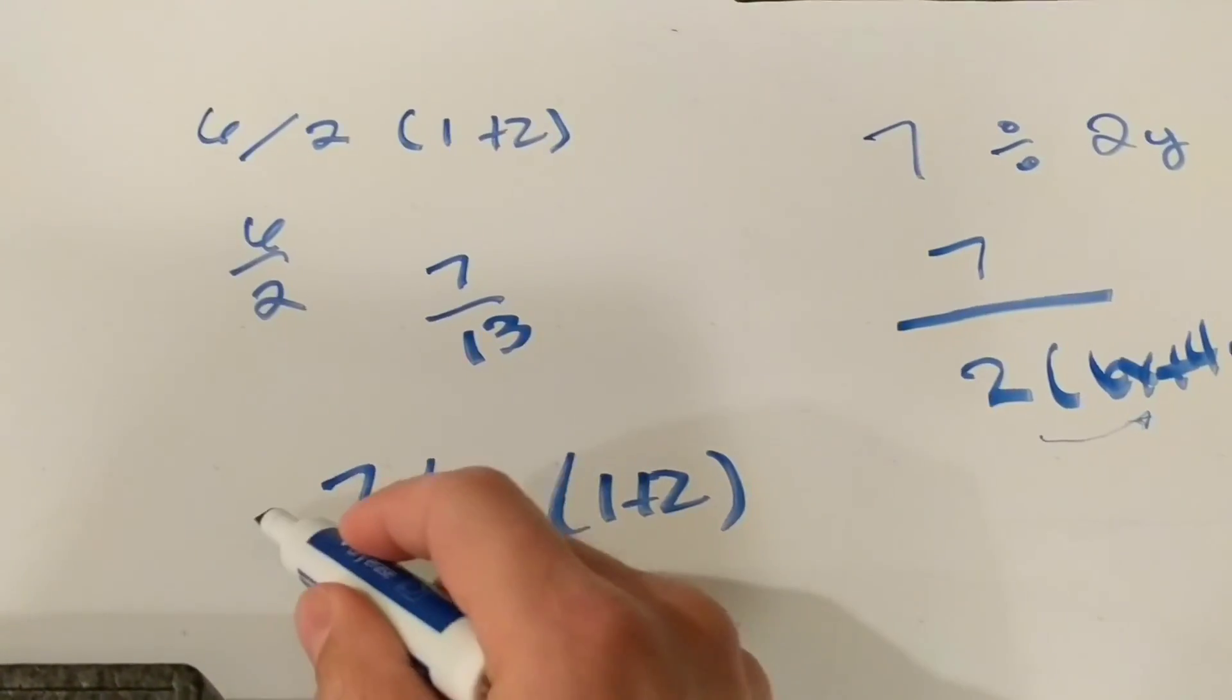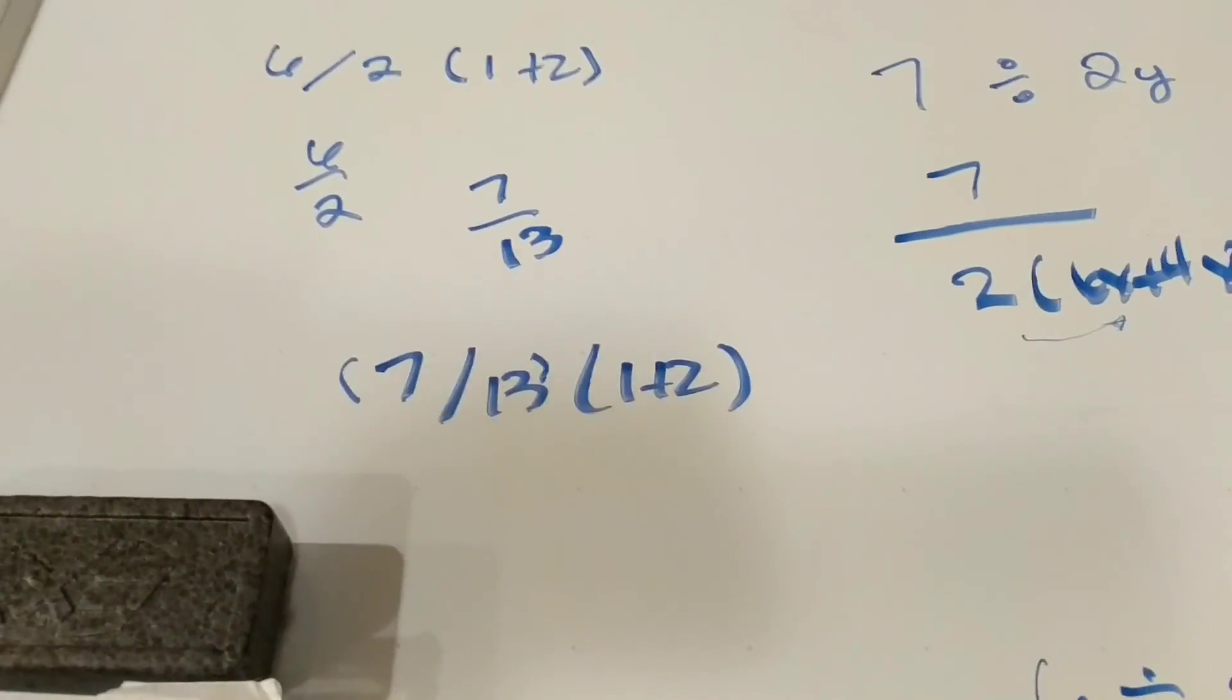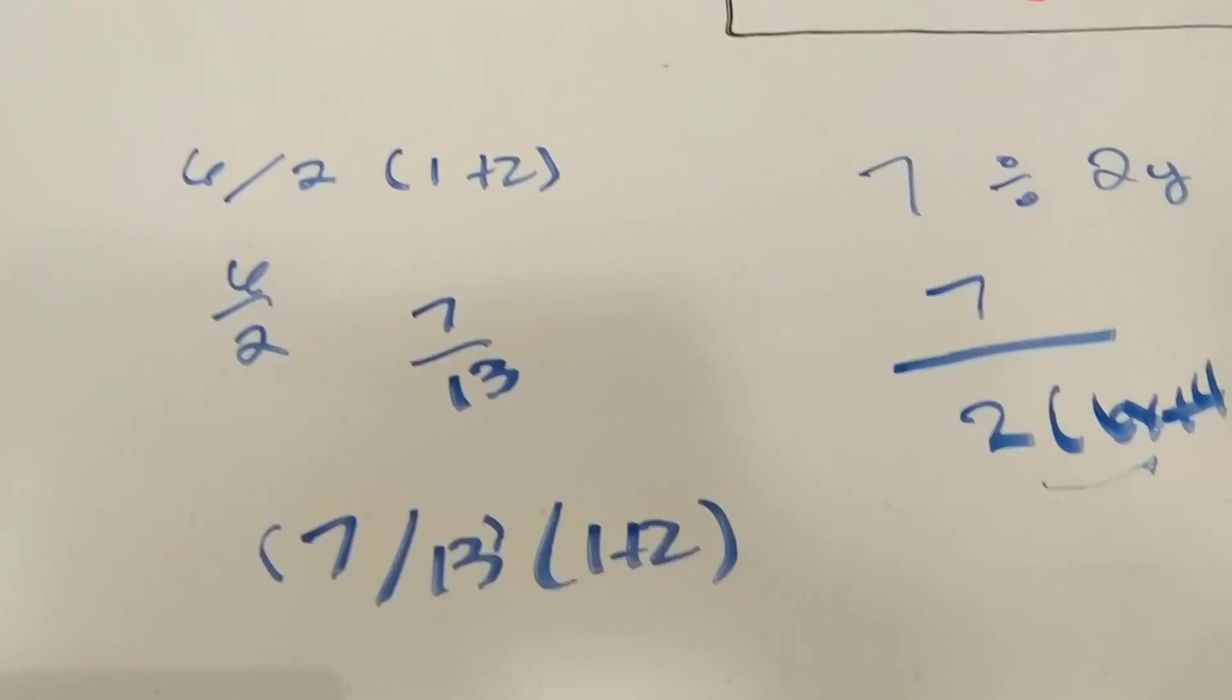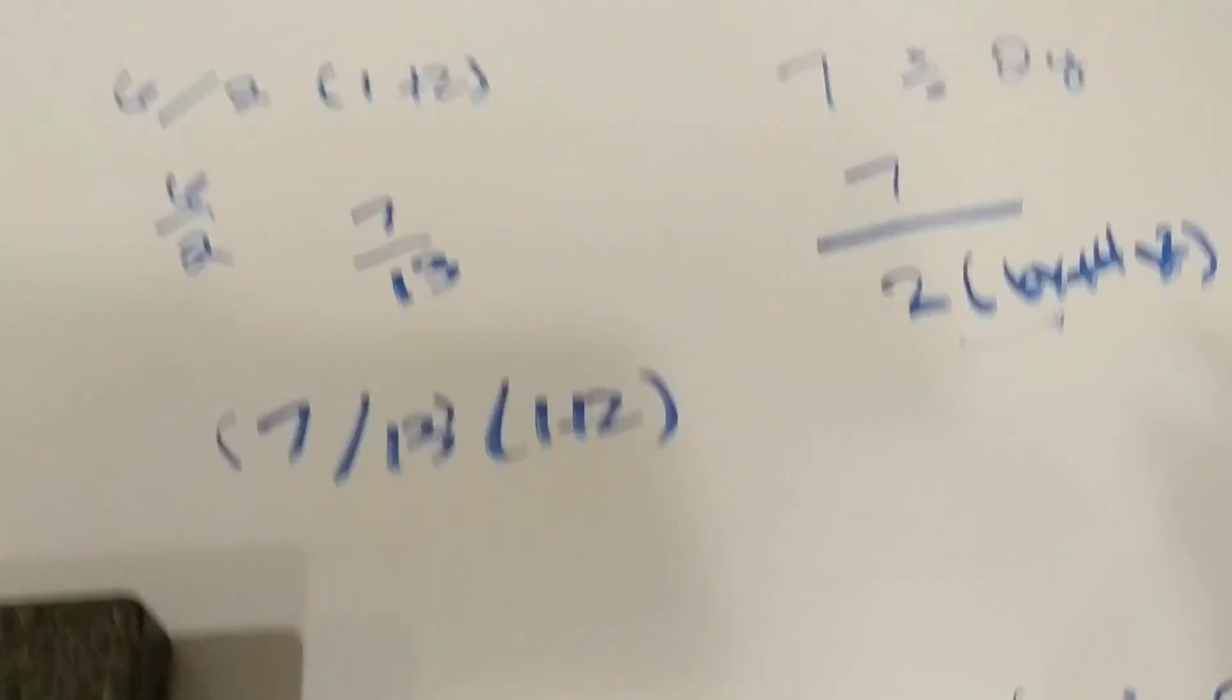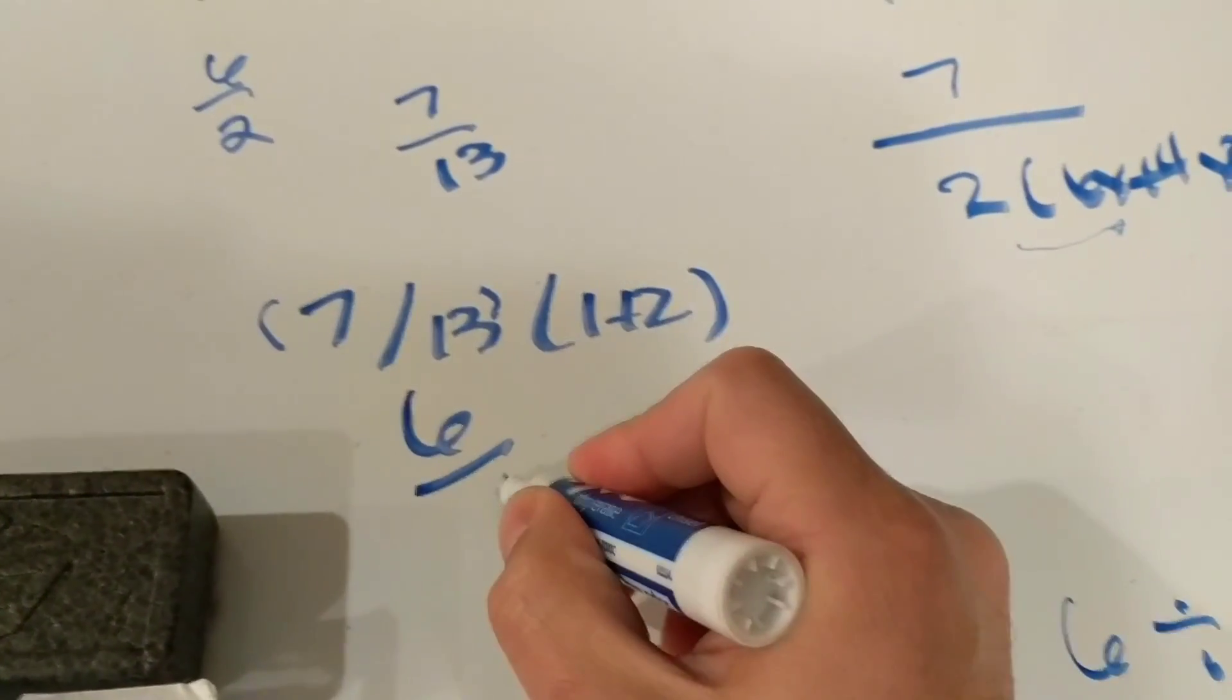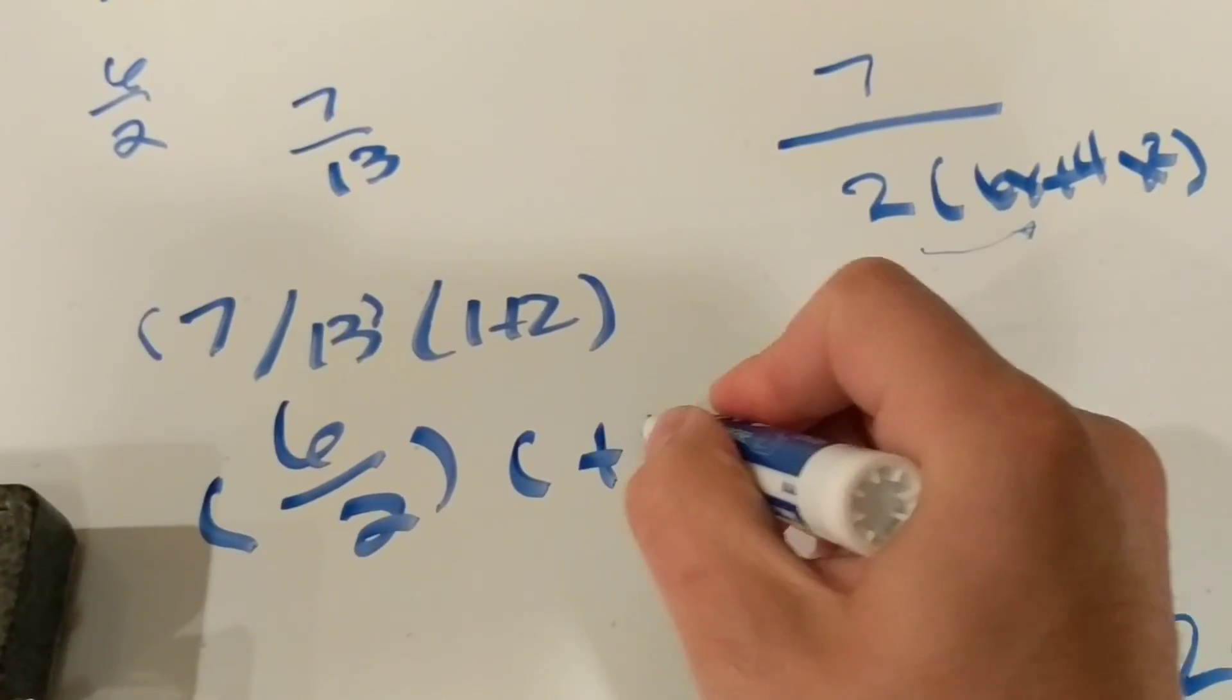And that is easy to see because if you punch this into Google, on their calculator it pops out this. It says 6 over 2 in parentheses, and then says 1 plus 2.